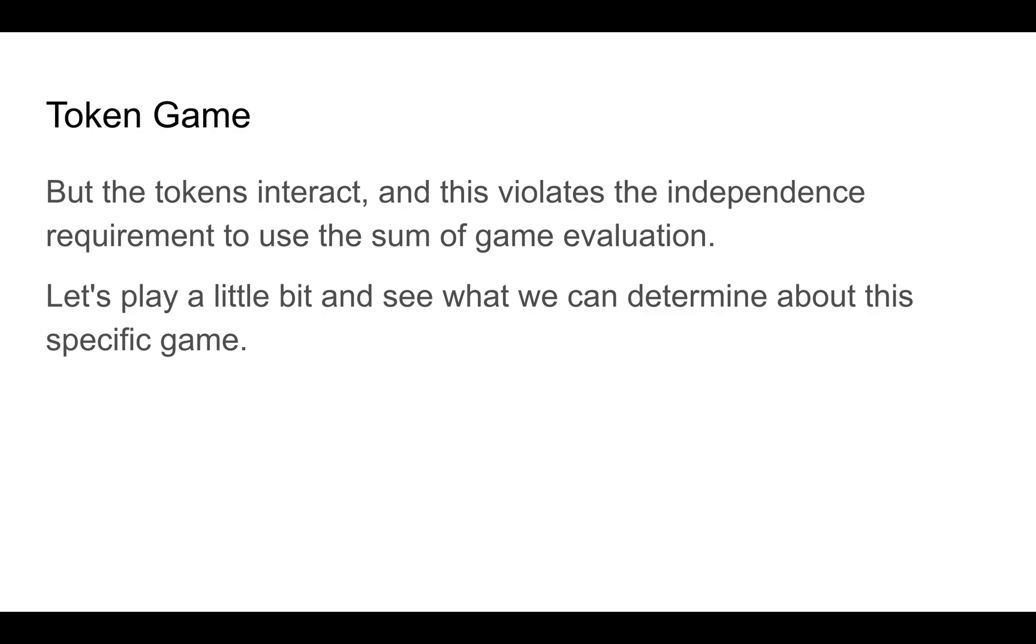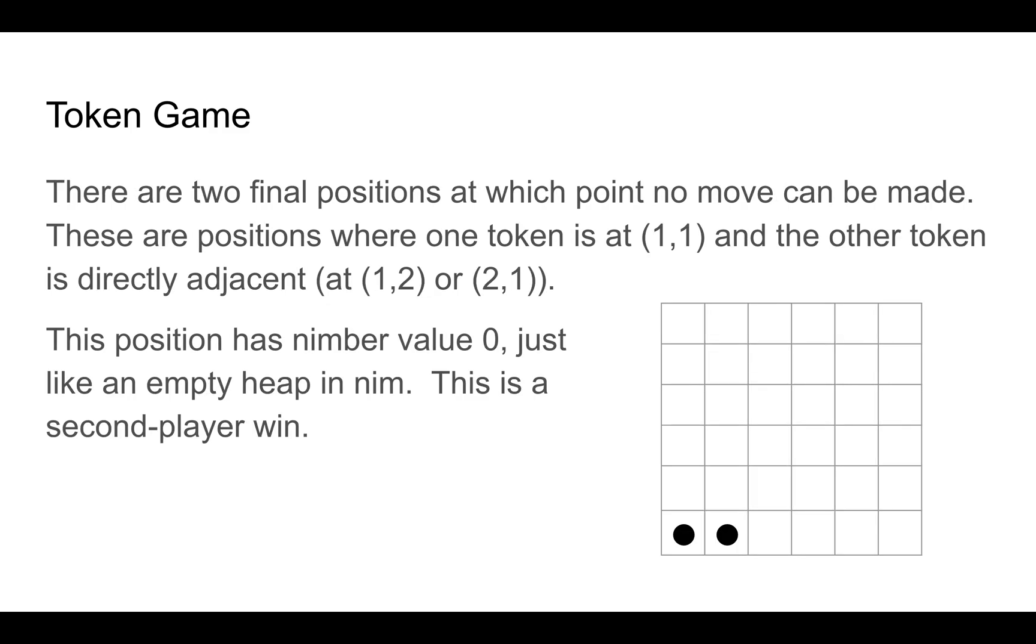But let's play around with the game a little bit and see if we can come up with a way to reduce things. There are two final positions at which no move can be made. This is a position where one of the token is in the lower left corner and the other token is directly adjacent to it. And this position is nimber value 0, just like an empty heap in nim. So it's a critical value, it's a second player win.